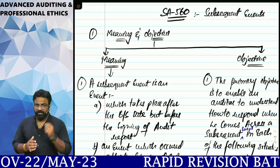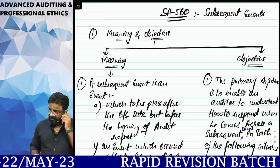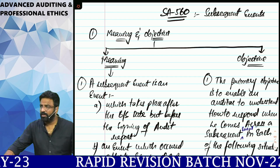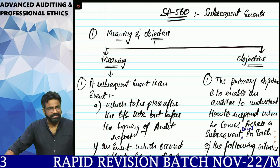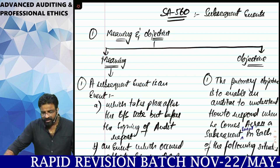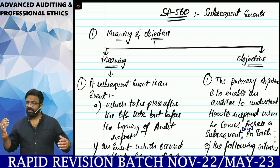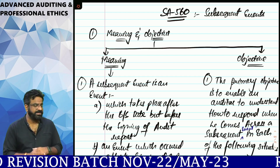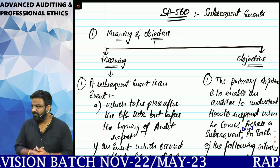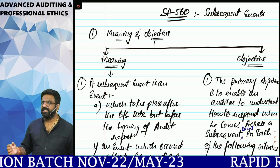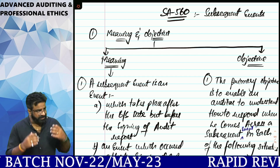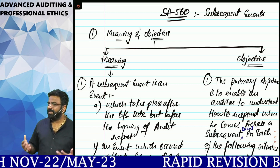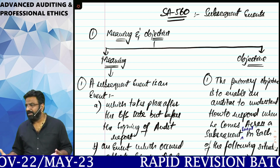Welcome back everyone. I hope you enjoyed the previous session on SA 540, which covers auditing accounting estimates and checking their fairness and disclosure. The next standard we are going to take up is SA 560, which deals with subsequent events. In this standard, we will understand how the auditor obtains audit evidence regarding subsequent events.